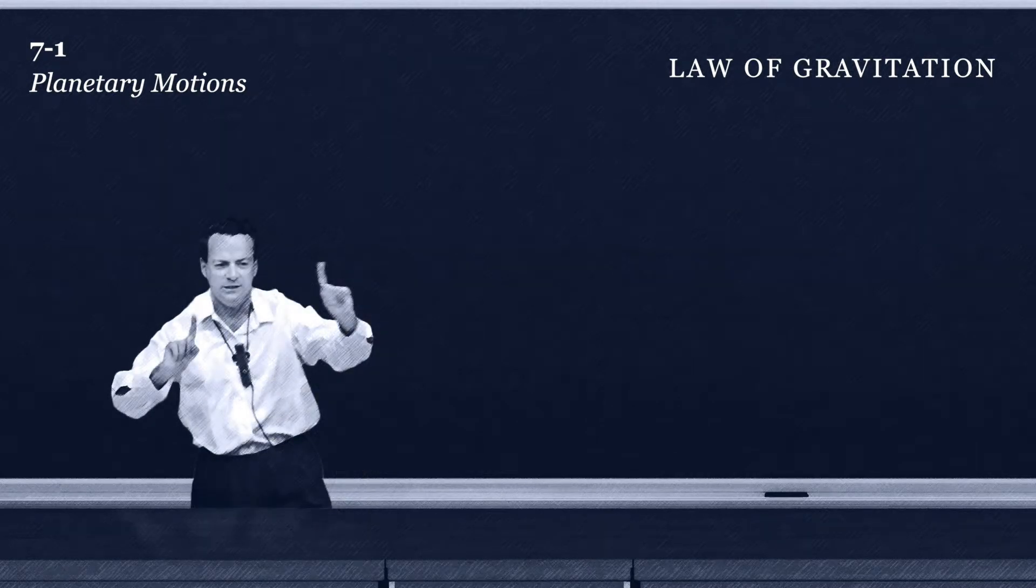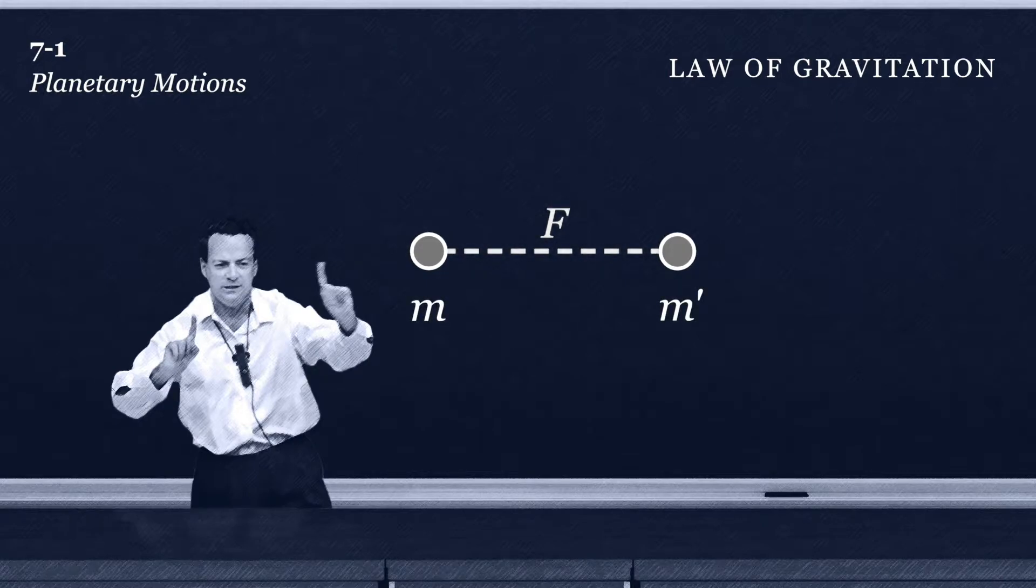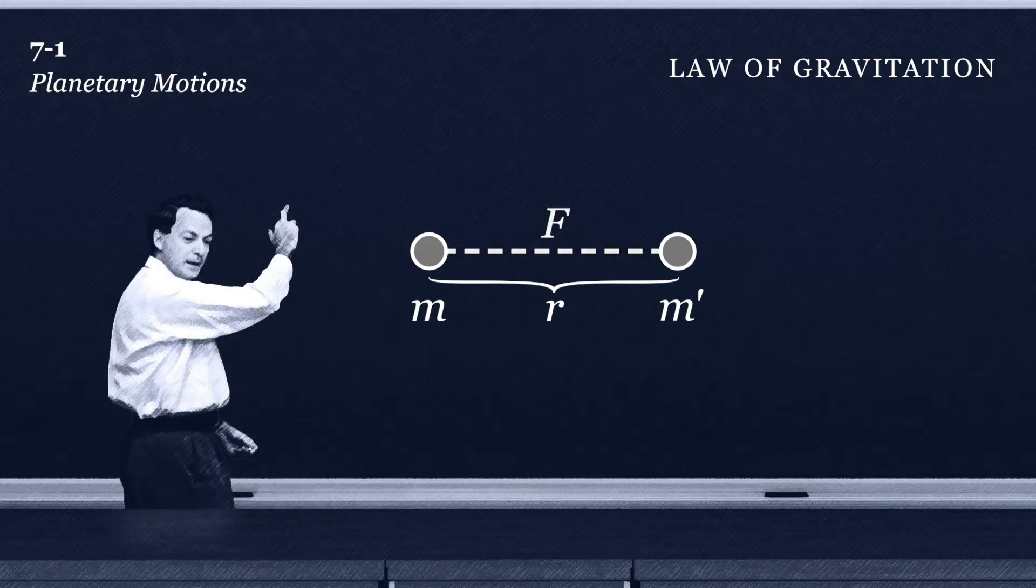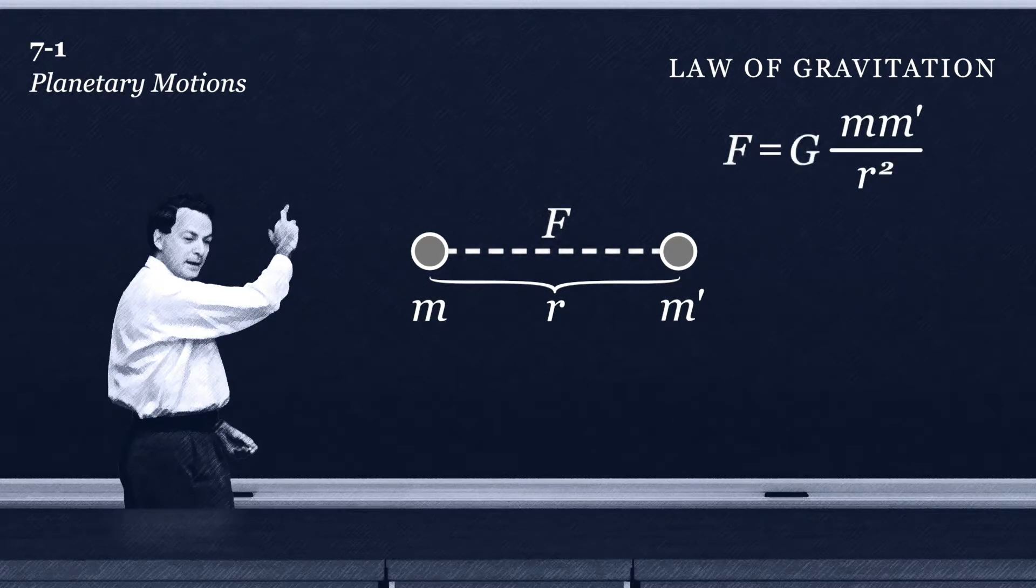What is this law of gravitation? It is that every object in the universe attracts every other with a force proportional to the mass of each and varying inversely as a square of the distance between them. If you like mathematics, you can write that same thing as an equation proportional to the mass of each and inversely as a square of the distance between them times some constant.